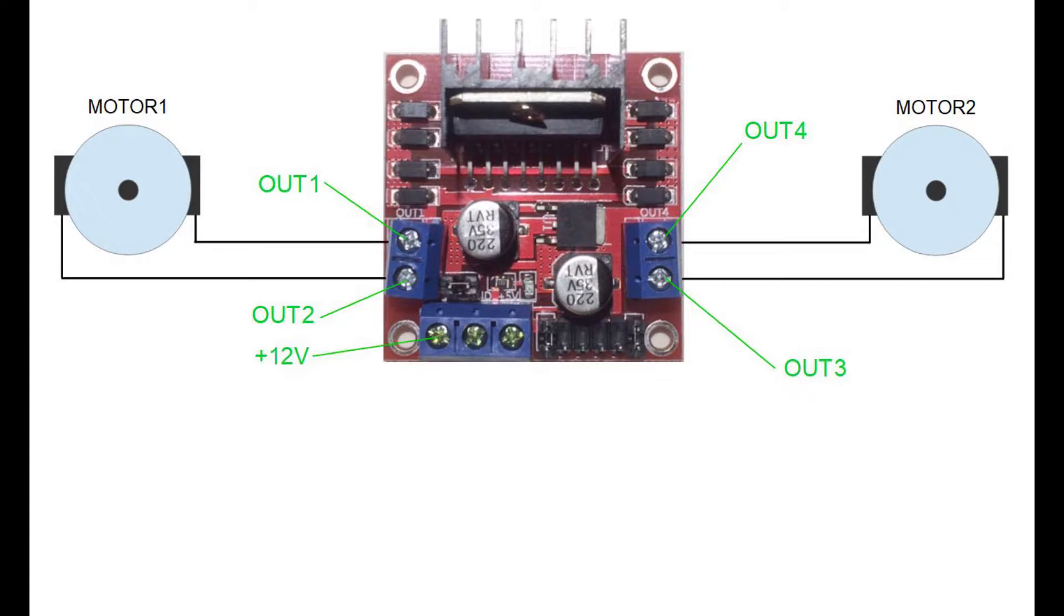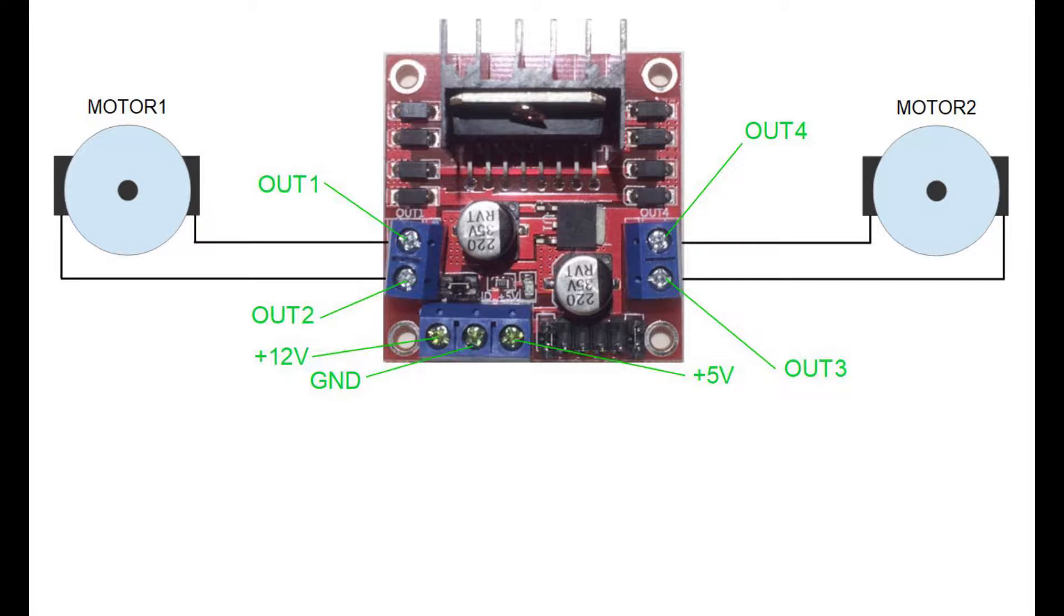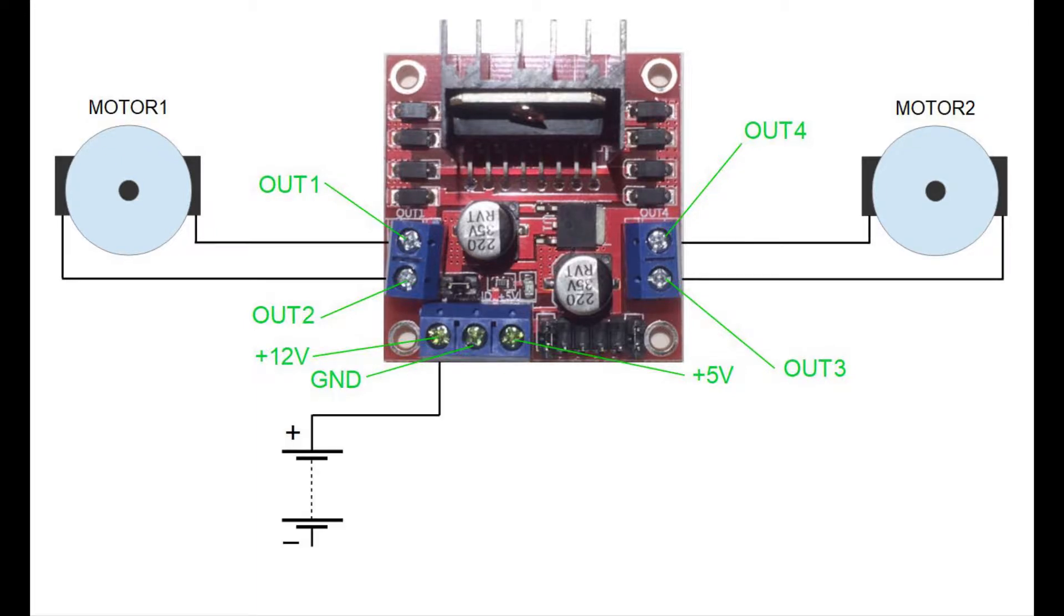Next we have the 12V input, GND, and 5V connections. The 12V voltage input is the place where you connect the positive terminal of your battery pack and GND connection is the place where you connect the negative terminal.